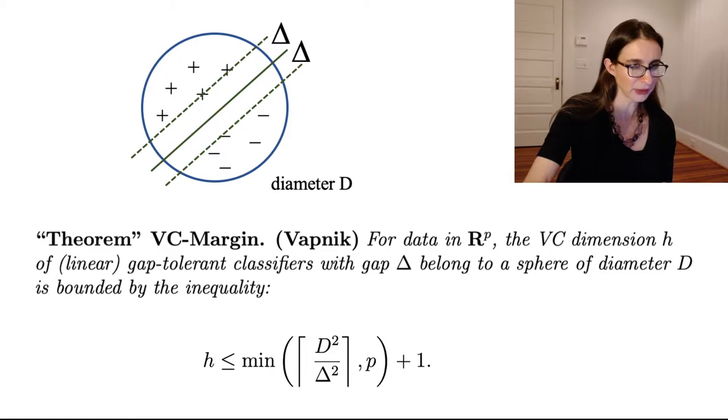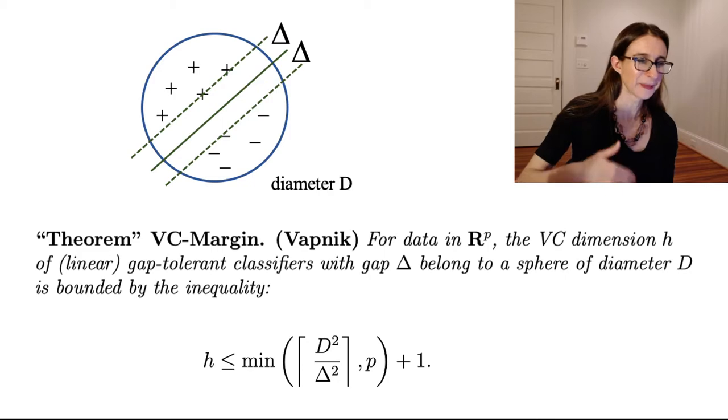And that's exactly what Vapnik proved. He said that for data in R^P, in P dimensions, the VC dimension h of linear gap-tolerant classifiers with a gap of delta belonging to a sphere of diameter D is bounded by this inequality. So this says that the VC dimension is upper bounded by one over the margin squared. So if we have a large margin,